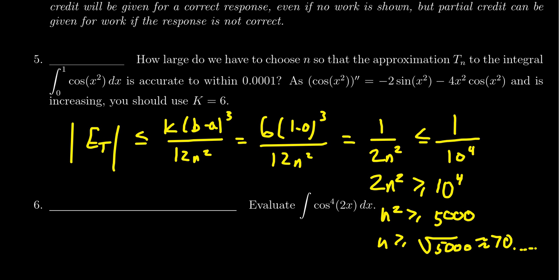But we need an integer, so we round up to the next integer. The smallest integer that will give us accuracy within four decimal places is 71. We round up because if we round down to 70, we're potentially too small. So we have to round up to 71.